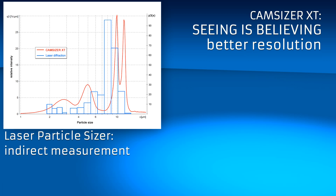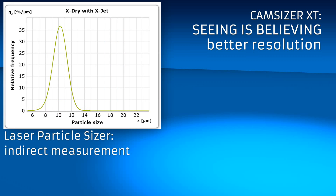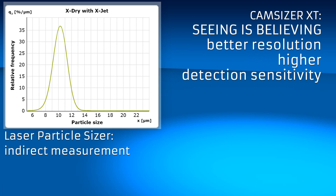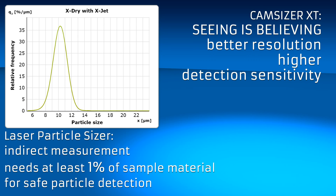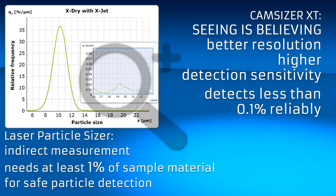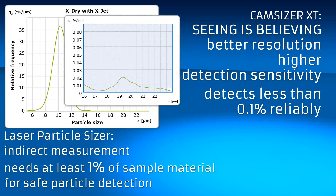The CamSizer XT not only offers better resolution, it also features a higher detection sensitivity. Whereas a typical laser diffraction analyzer needs at least 1% of material for the safe detection of oversized or undersized particles, the CamSizer XT can already detect less than 0.1% reliably.